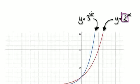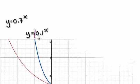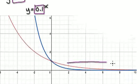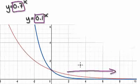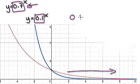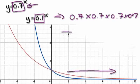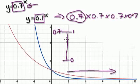When the base is above 1 — like 2 or 3 — the graph grows. But when the base is less than 1, like 0.7, as x increases every time you multiply by 0.7 it gets smaller and smaller. Here at x equals 0, y equals 1, and that's your starting point. Every time you multiply by 0.7 it gets smaller.